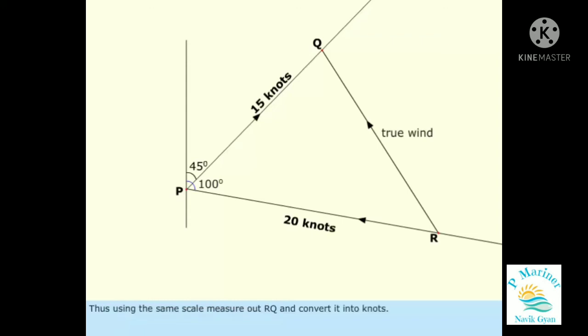Thus, using the same scale, measure out RQ and convert it into knots. To obtain true wind, draw a line through Q and read off the angle between it and RQ, 147 degrees in this case. Thus, true wind direction is 147 degrees and true wind speed is 17 knots.